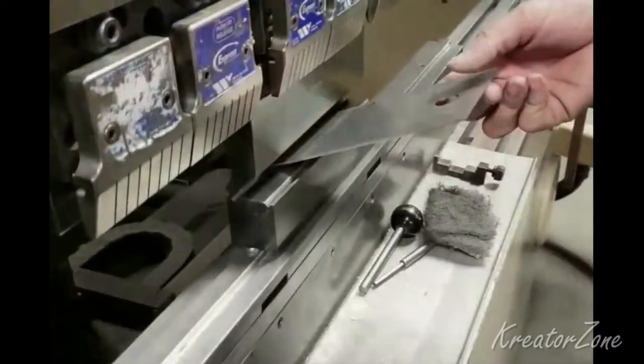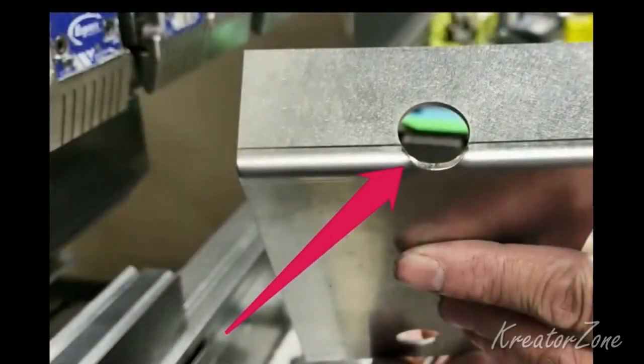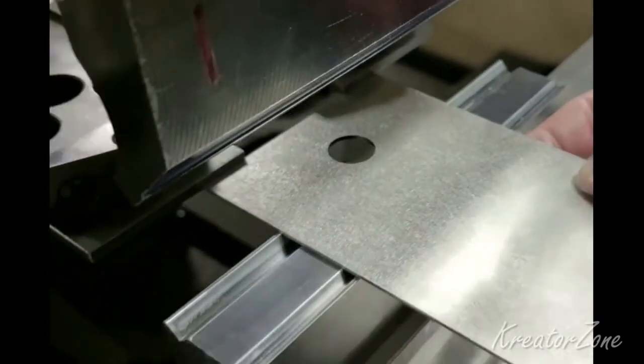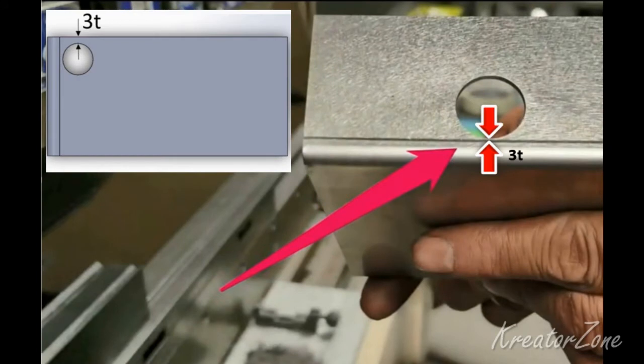If an extruded hole is too close to the part edge, it can lead to deformation or tearing of the metal. As shown, it is recommended that the minimum distance between the extruded holes to part edge should be at least three times the thickness of the sheet.